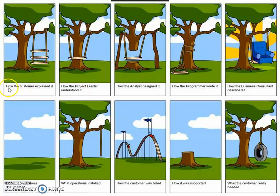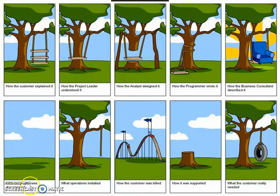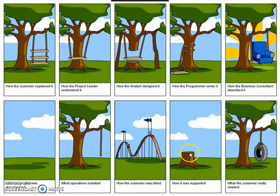So here we see how the customer explained it — the design that the customer wants. Then we progress through: how the project leader understood it — a swing that won't work; how the analyst designed it — even worse; how the programmer wrote it — a little 90-degree angle there; how the business consultant described it — a pristine, beautiful, perfect, very comfortable chair with a halo around it; how the project was documented — usually nothing; what operations actually installed — the swing rope but not the swing itself; how the customer was billed — instead of a little swing, a huge gigantic roller coaster; and how it was supported — half the tree but not the top part that's important.